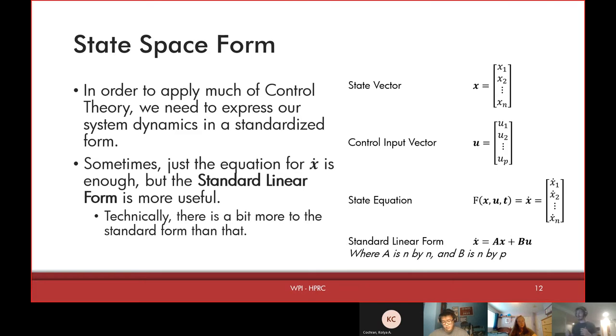In any case, kind of going down from the right, we have the state vector, mentioned earlier, where you just have one through N states, where X one might be position, X two might be velocity. It depends on what you're modeling. Control input, you might have, oftentimes you might just have one control input. Like in the case of the rocket, we only have one control input. That is how far we want to extend the air brakes. But if you compare it to something like a plane, a plane has many different control surfaces, all of which can be at different angles. And so you can have one through P control surfaces. And then the state equation, that's our equation for X dot, which depends on X, U and T.